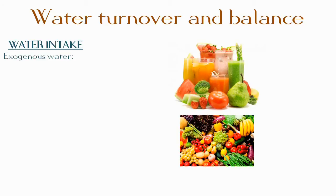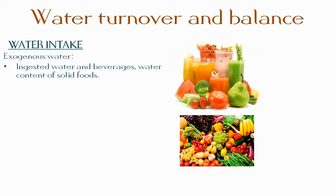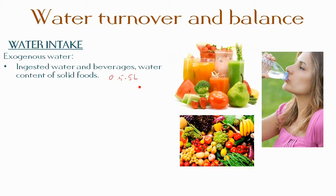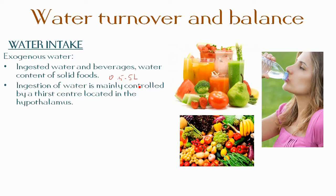Exogenous water includes ingested water and beverages, and the water content of solid foods. The water intake is highly variable, ranging from 0.5 to 5 liters per day. It largely depends on social habits and climate — people living in hot climates drink more water because the body demands a greater intake. The ingestion of water is mainly controlled by the hypothalamus, located in the brain.